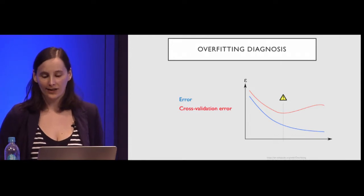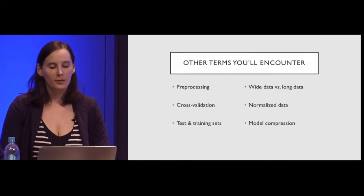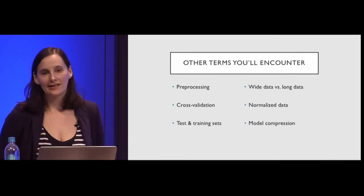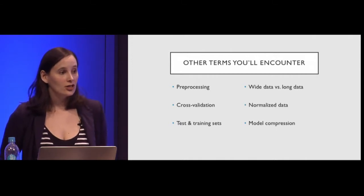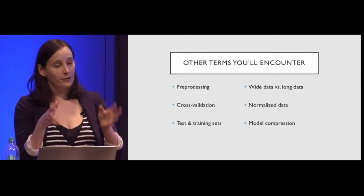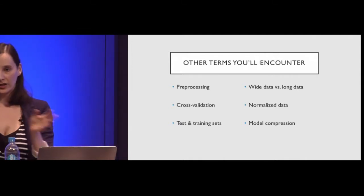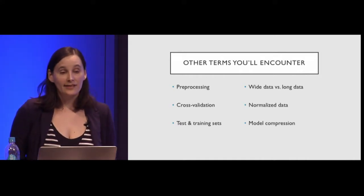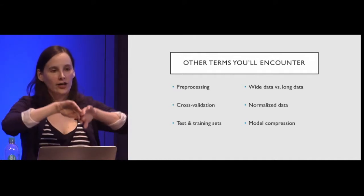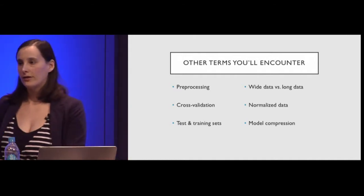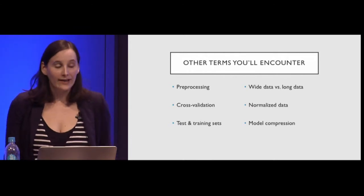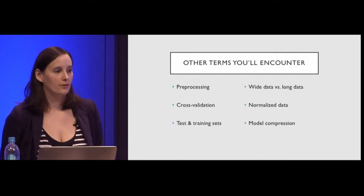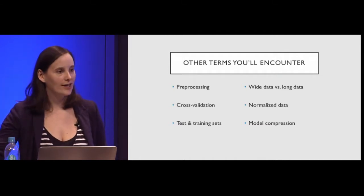Other terms you'll encounter: pre-processing just means getting your data ready. Cross-validation is breaking your data into chunks, building on one chunk, testing on another, in a round-robin of 5, 10, or 20. Testing and training sets is when you just chunk your data in two — one to build your model, another to validate it.